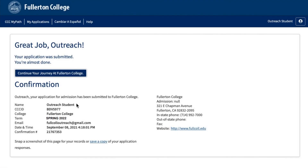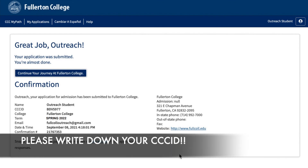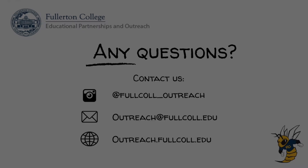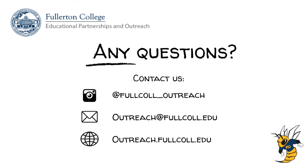After submitting your online application, you will then see a confirmation page. Please check your email for important information such as your college ID number and password. It's important to check your email because your banner ID and MyGateway password will be sent to your email. You will need your banner ID and MyGateway password to log into your MyGateway account. Congratulations! You have now completed the Fullerton College application. If you have any questions, please contact the Educational Partnerships and Outreach team at our Instagram at fullcall_outreach, our email at outreach@fullcall.edu, or through our outreach website at outreach.fullcall.edu. Thank you and have a great day!